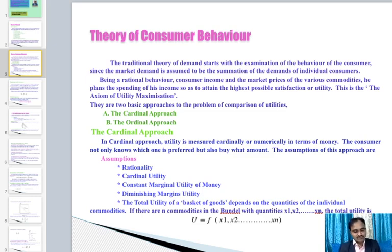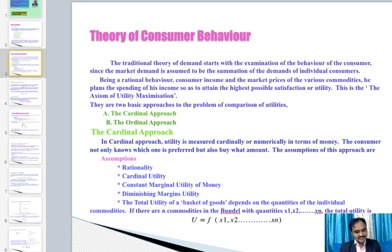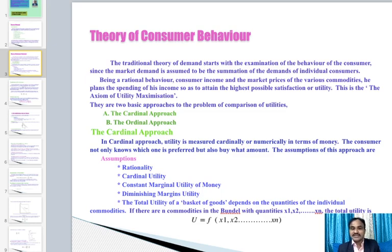The assumption of constant marginal utility of money is necessary if the monetary unit is used to measure utility, as the essential feature of a standard unit of measurement is that it must be constant. Another important assumption is diminishing marginal utility: the utility gained from successive units of a commodity diminishes. In other words, marginal utility decreases as the consumer acquires a larger quantity — this is called the axiom of diminishing marginal utility. The total utility of a basket of goods depends on the quantities of individual commodities.